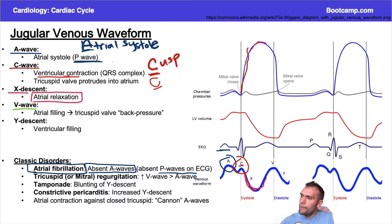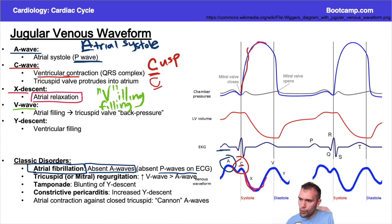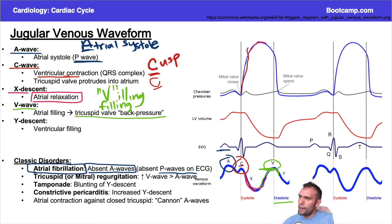Then we have the V wave — I think of V for 'villain' or 'filling.' This wave represents atrial filling: pressures rise back up as the atrium fills near the tail end of systole. The V wave reaches a peak that is usually lower than the A wave in terms of pressure. This is due to filling of the atrium, with some back-pressure from the tricuspid valve also contributing.